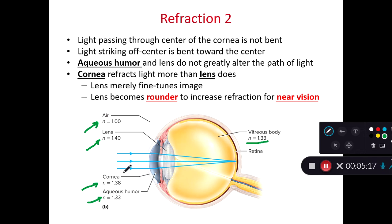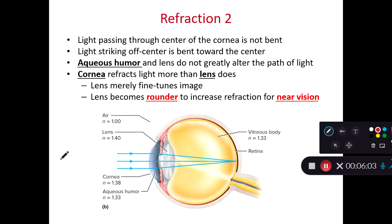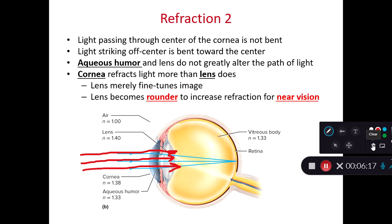Our cornea has a refractive index of 1.38, and because of its high degree of curvature, the cornea is going to refract more light than the lens. The lens is going to focus on fine-tuning the images. The lens becomes rounder to increase refraction for better focus on things that are near. For close objects, photons of light travel in multiple different directions as they hit the eye, so the lens needs to become rounder to accommodate. For very far objects, the photons are traveling nearly parallel to each other by the time they reach the pupil, so the lens doesn't need to refract them as much.